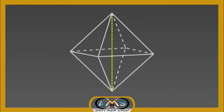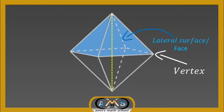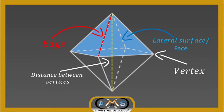The corner point where 4 edges meet is called a vertex, and 3 equal edges create a face of the regular octahedron. Here, this one is the lateral surface, or we can say this one is a face. Edges are the meeting lines of 2 faces. This red line indicates the edge — the meeting line of these 2 faces. And this yellow line indicates the distance between 2 vertices. In the case of a regular octahedron, all distances between vertices are equal.